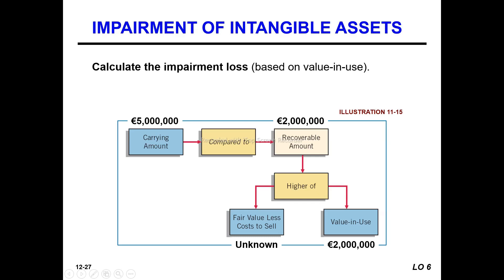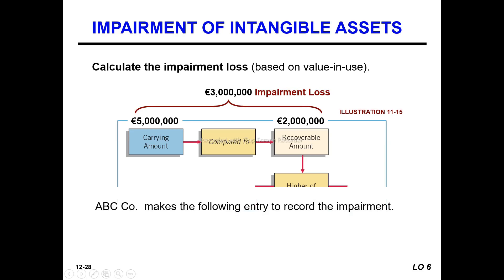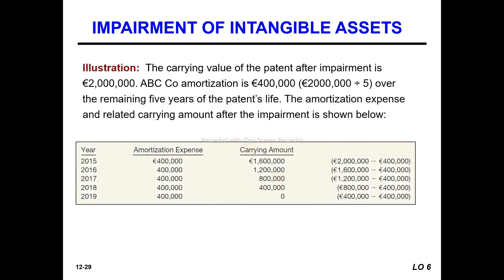If the carrying value is greater than the recoverable amount, it is an impairment. The loss on impairment is recognized for the patent. Annually, the impairment indication will be assessed. After impairment, the carrying value of the patent equals the recoverable amount, and the additional impairment is zero.